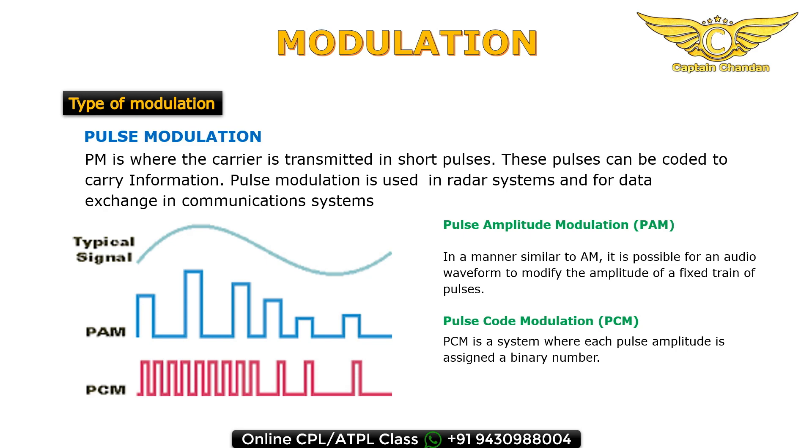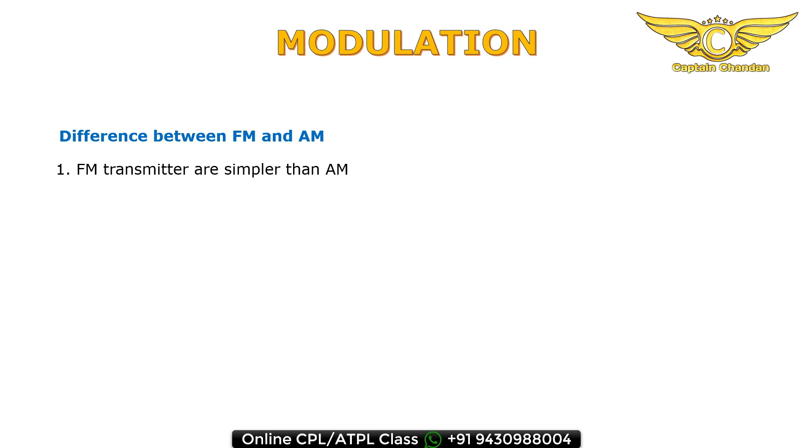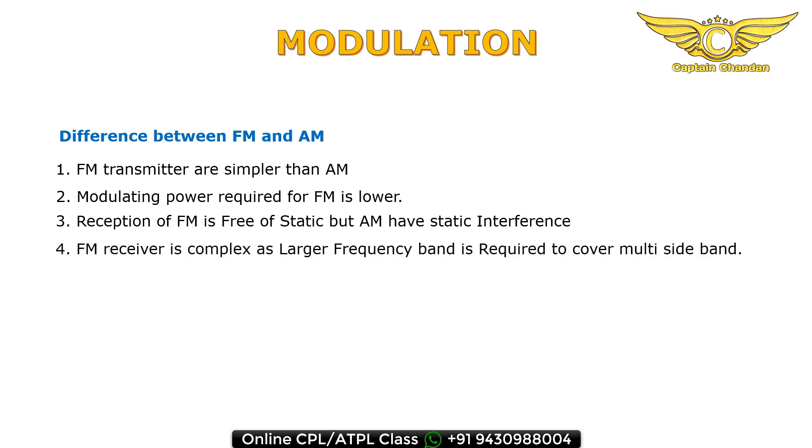Differences between frequency modulation and amplitude modulation: Number one, FM transmitters are simpler than AM. Number two, modulating power required for FM is lower. Number three, FM has clear sound but AM has static interference like old radios. Number four, FM receiver is complex. FM requires a larger frequency band to cover multi-sideband.